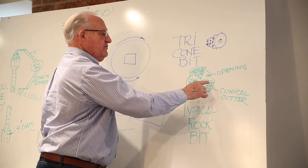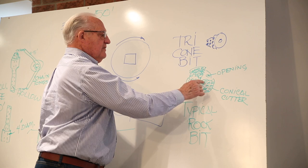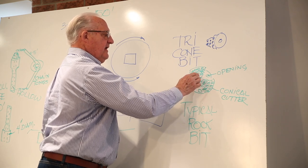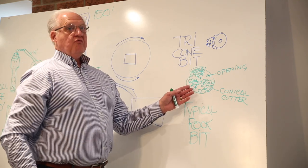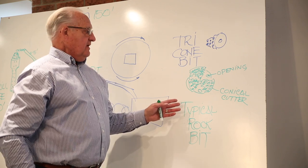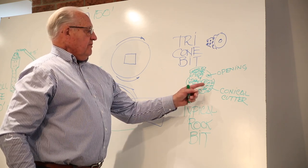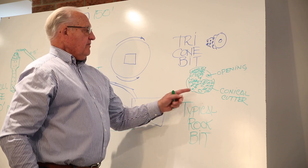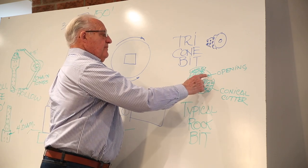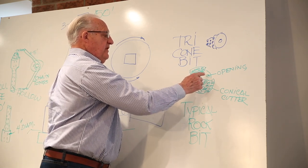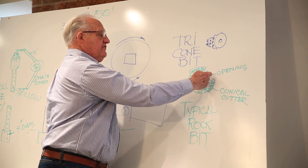So we're looking at the bottom of the bit. When this is lowered against rock, as this turns, each of these cones start turning. But the speed of each layer of these cutting knobs is different, so they really grind up the rock.